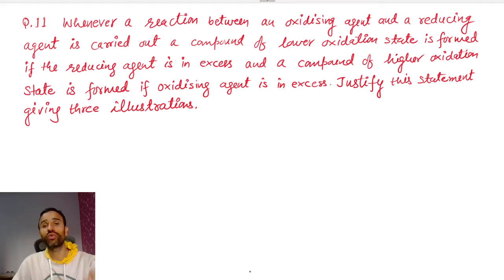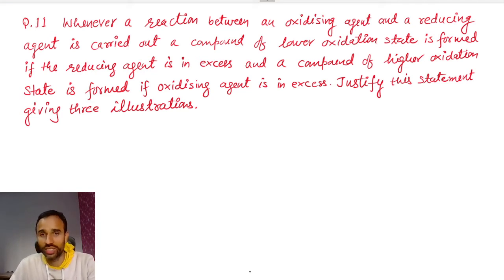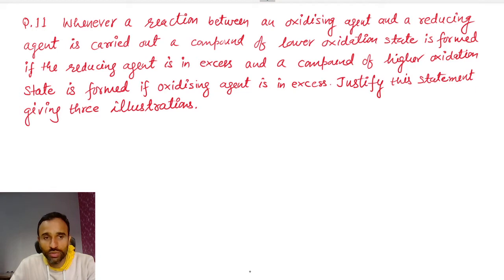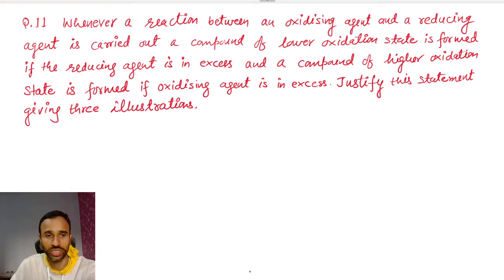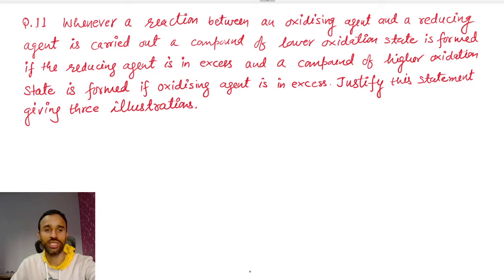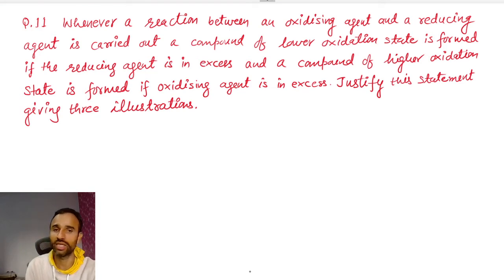Whenever a reaction between an oxidizing agent and a reducing agent is carried out, a compound of lower oxidation state is formed if the reducing agent is in excess. A compound of higher oxidation state is formed if the oxidizing agent is in excess. We have to justify this statement by giving three illustrations.